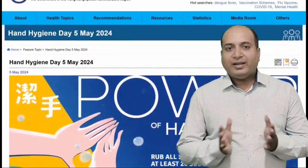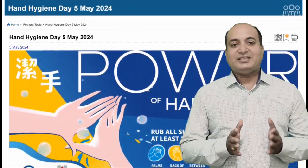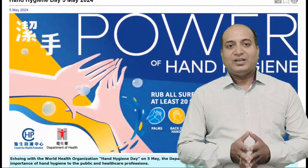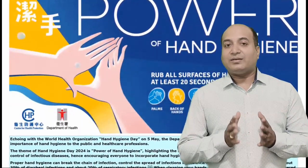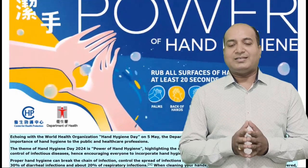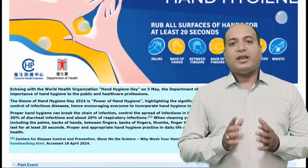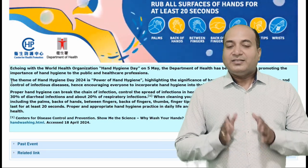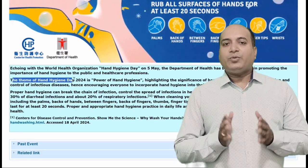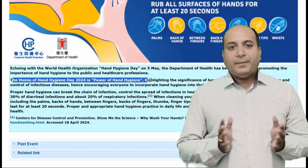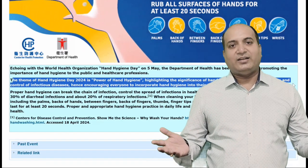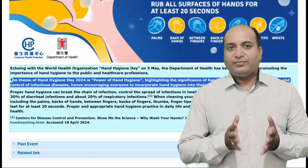The theme for Hand Hygiene Day 2024 is 'Power of Hand Hygiene,' which underscores the critical role that proper hand hygiene plays in the prevention and control of infectious diseases. This theme aims to inspire everyone to adopt hand hygiene as an essential and non-negotiable part of their daily routines.